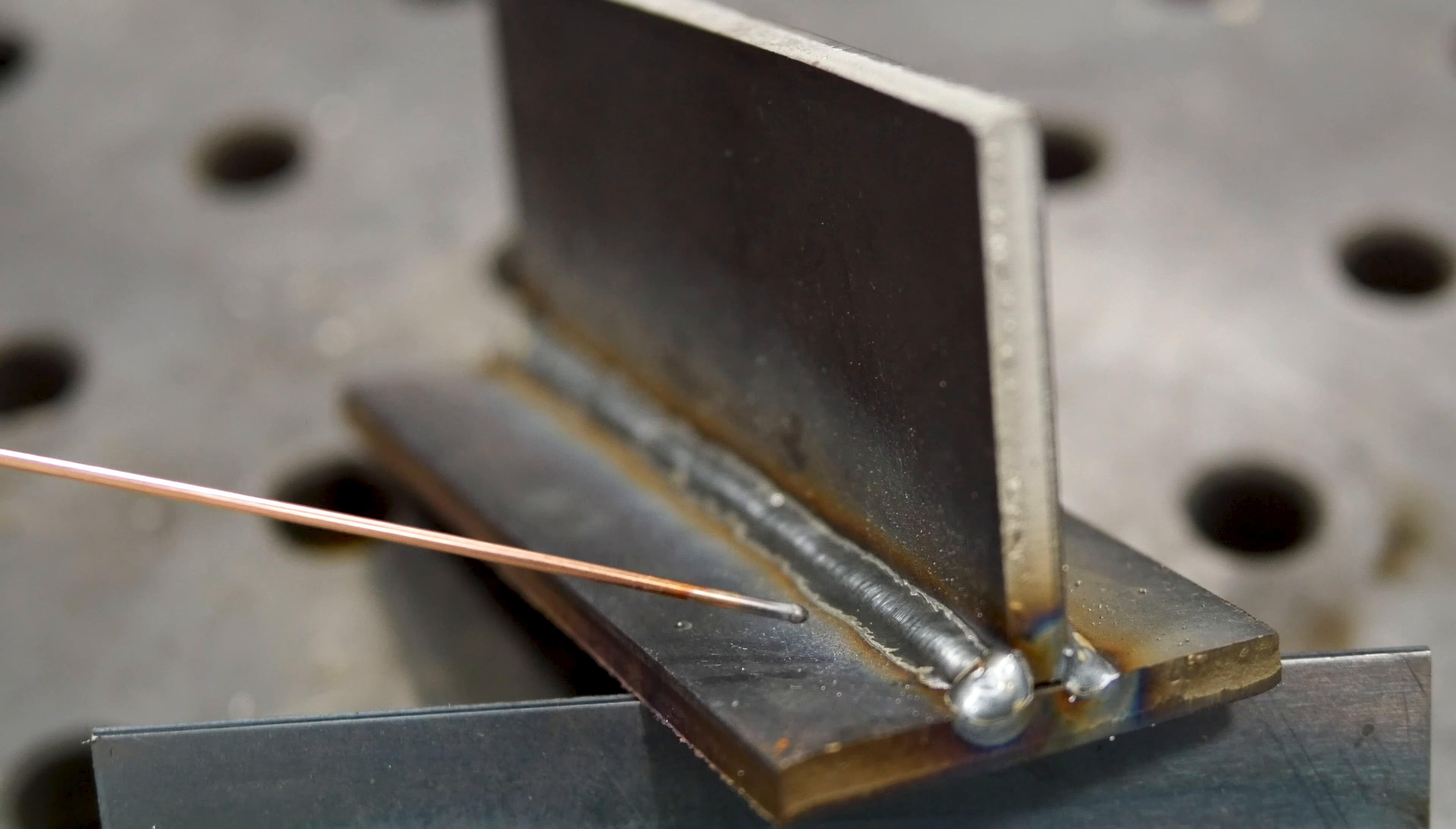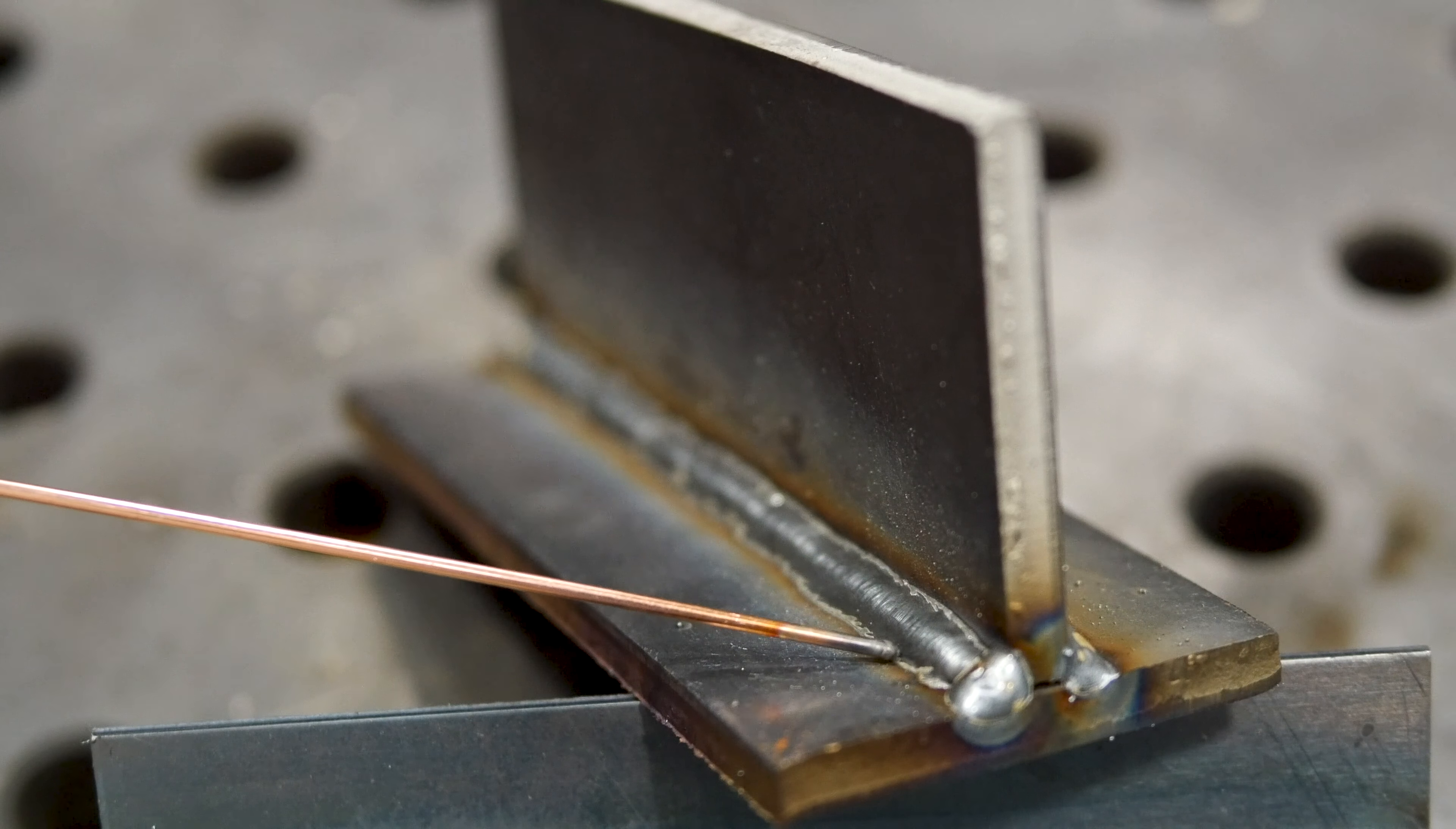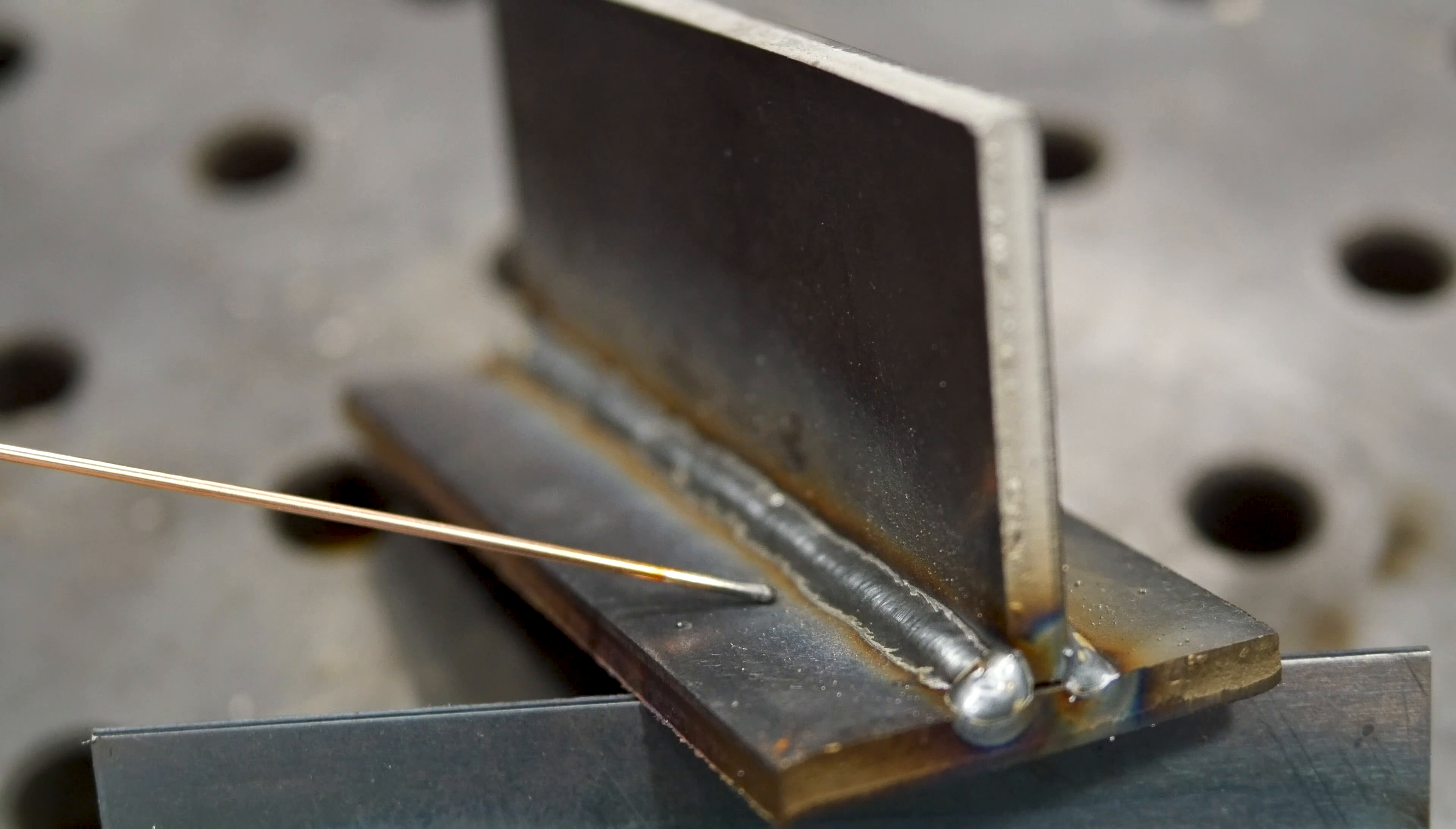If I were to turn my machine up one volt higher, the bead would have flattened out and gotten a little bit wider. Because remember voltage is bead profile and wire feed speed is amperage which is your penetration.